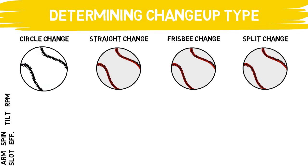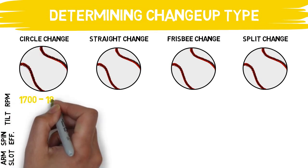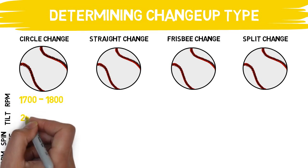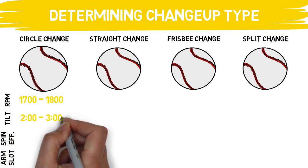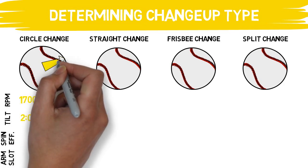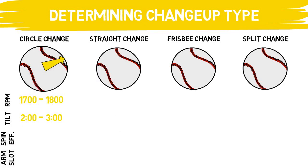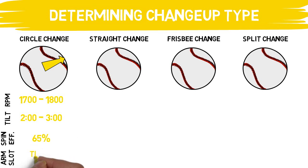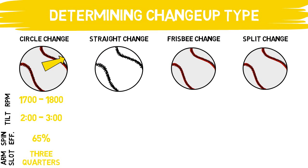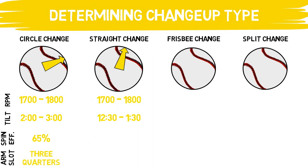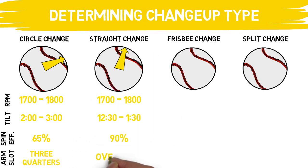The circle change falls in the same spin rate range described earlier. The tilt I've seen on this pitch to be most successful is between 2 and 3 o'clock, with a typical spin efficiency of 65% or above. I see this pitch mostly with three-quarter arm slot pitchers, though it does range across the board. The straight change comes in with a similar spin rate but a much higher tilt and spin efficiency, because it is typically thrown by overhand throwers who go straight over the top.